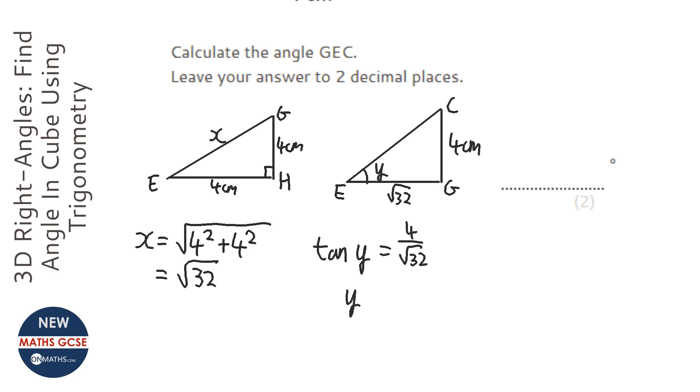Therefore, y is going to be the inverse tan of 4 over root 32. So inverse tan, fraction 4 over root 32, close the bracket, and it says the answer is 35.26.